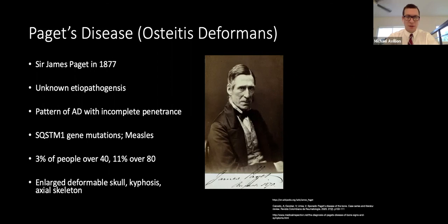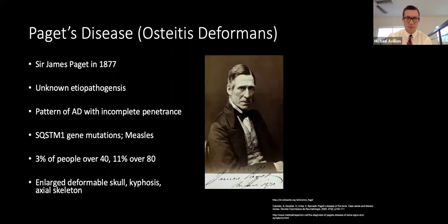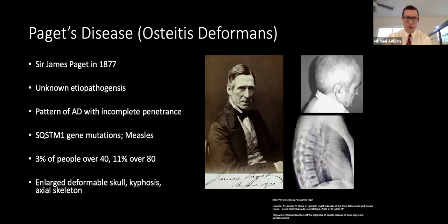Four loci are associated with Paget's disease, including a mutation in the SQSTM1 gene. Additionally, measles virus has been implicated: a 2011 study of bone marrow from Paget's patients demonstrated expression of measles virus nucleocapsid protein, which increases production of IL-6, in turn driving osteoclastic changes. The disease becomes more prevalent with age, with clinical manifestations typically onset in the sixth decade of life, including enlarging skull and progressive kyphosis.